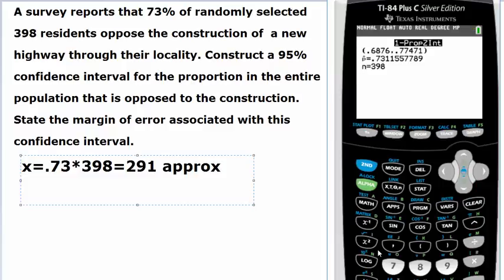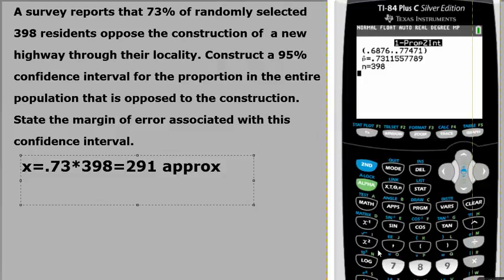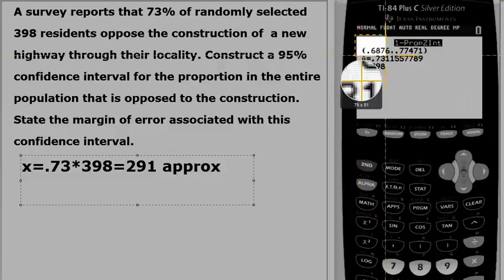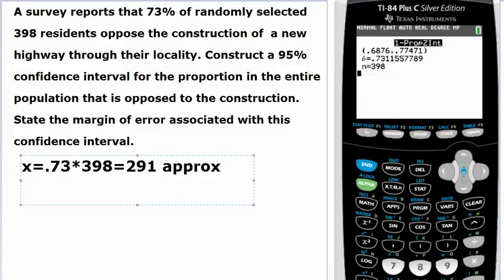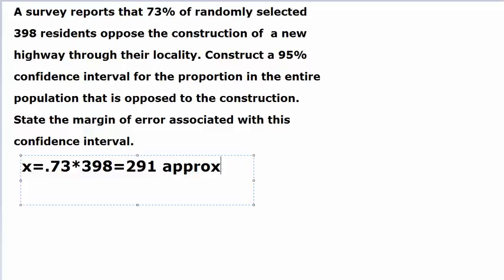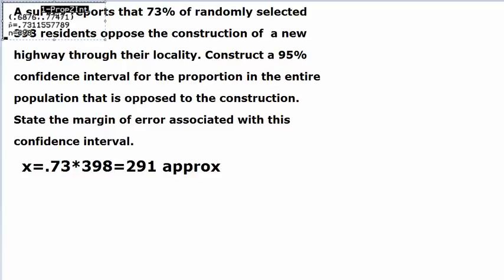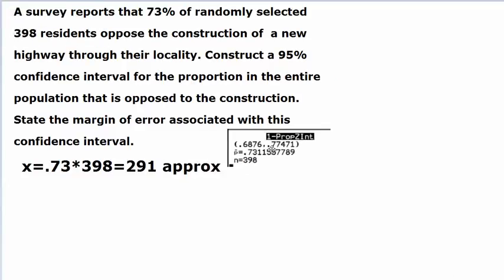What turns out as our one proportion z interval, that's about 68.76% to 77.4%. Let's just bring this in here. Here we are.